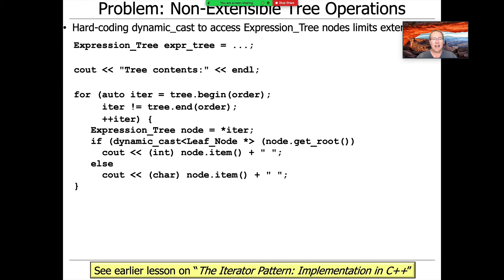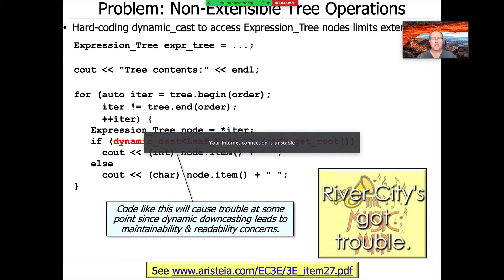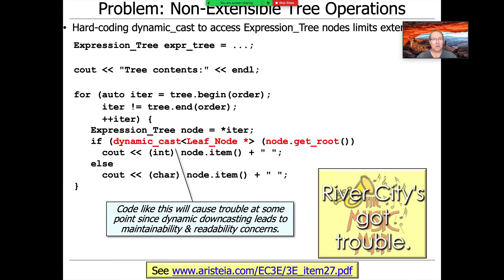Another approach is to hard-code dynamic casts to access the contents of expression tree nodes, but that limits extensibility. Whenever you saw an element, you'd ask: is this a leaf node, a composite add node, a composite divide node? The problem is that whenever you start putting downcasts or dynamic casts in your code, it's asking for trouble — you're tightly coupling yourself to a particular solution. It's really no better than a switch statement or if-else chain; you can think of downcasts as expensive, ugly, and non-flexible switch statements.